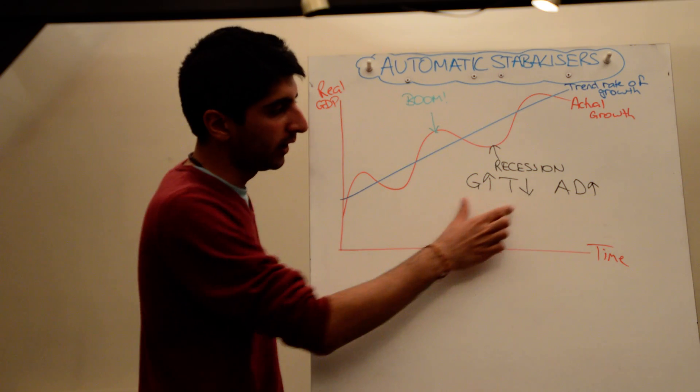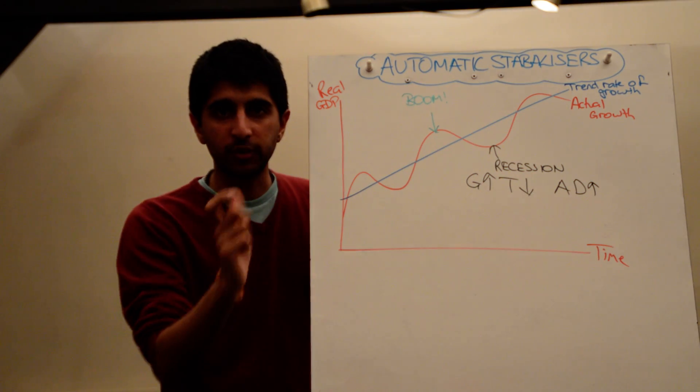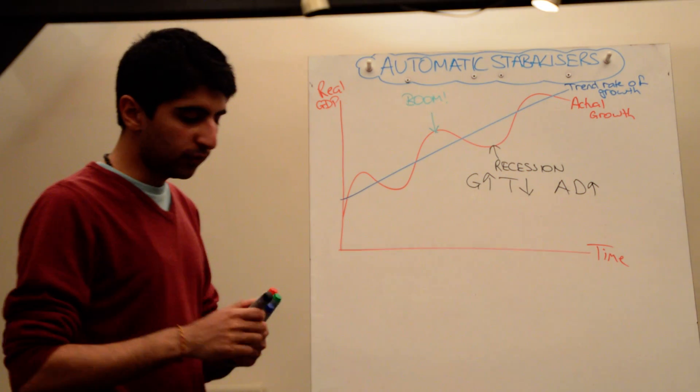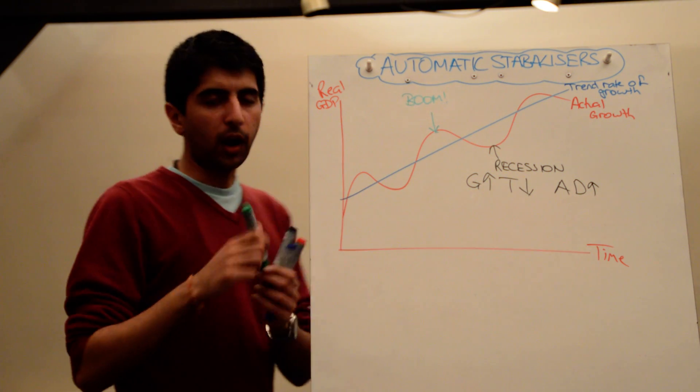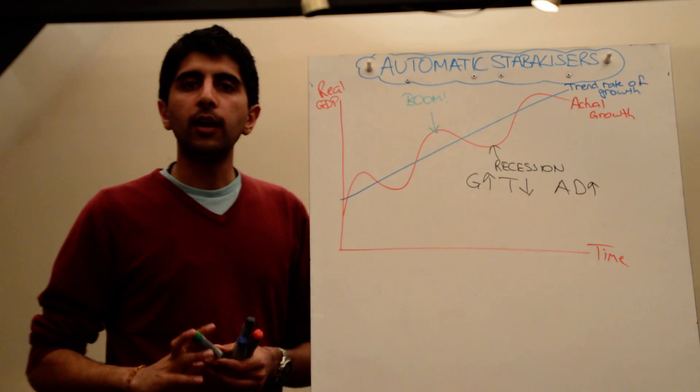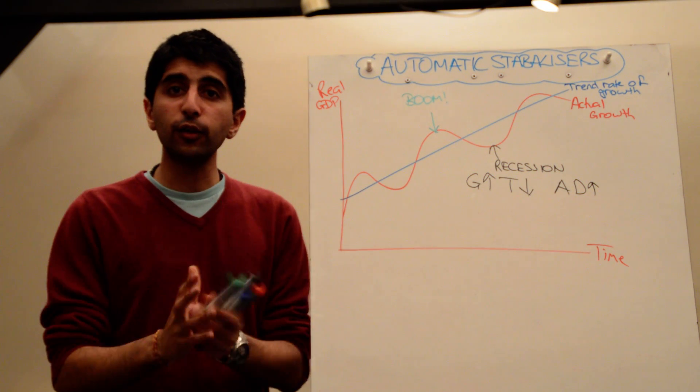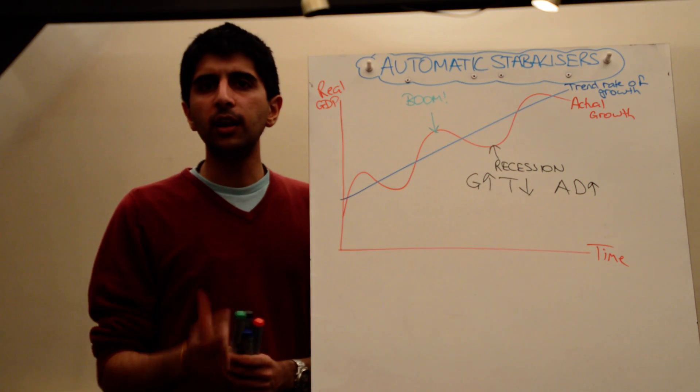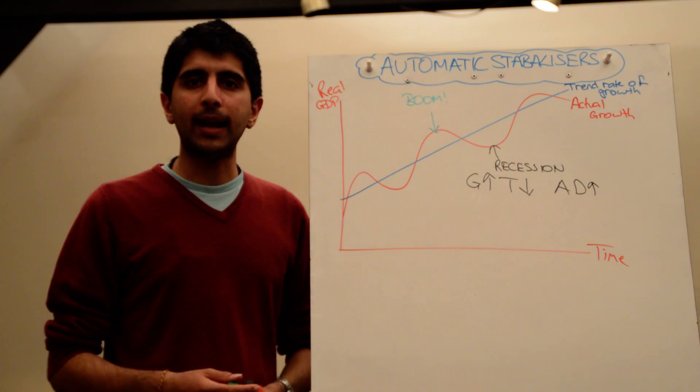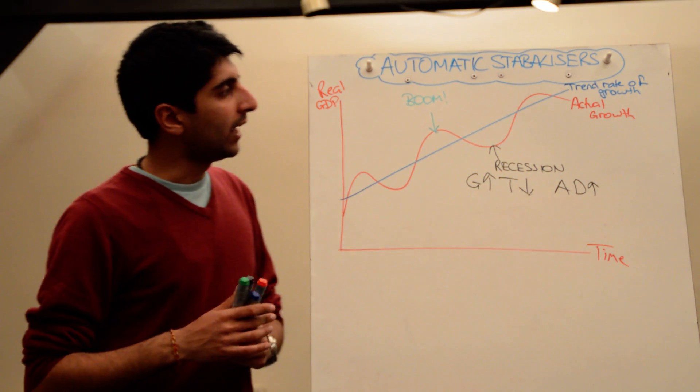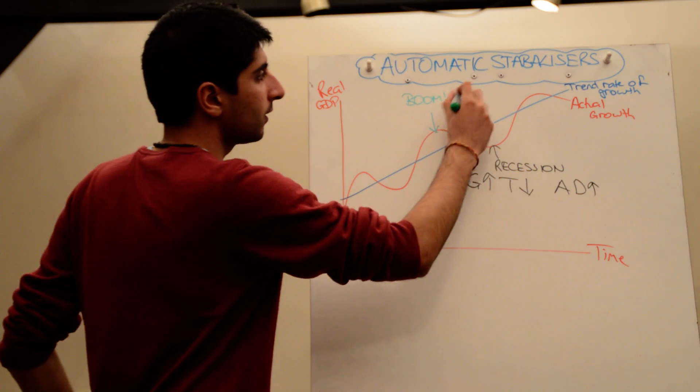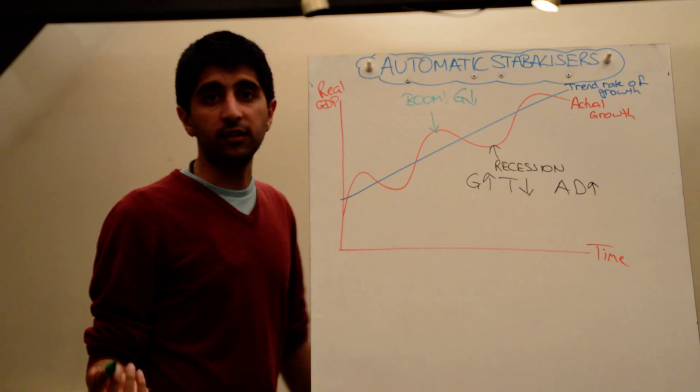So automatically these factors are going to, to some extent, allow aggregate demand to increase without the government actively getting involved at all. There are some benefits here from the automatic stabilizers. Let's do the same for a boom. In a boom time, isolate the labor market. What's happening in the labor market? Well, there are lots and lots of people in work. It's actually very hard to find excess labor now because simply everyone is in a job, everyone's got a job.